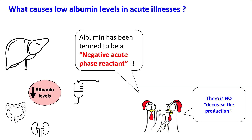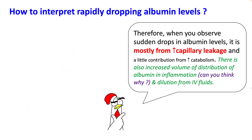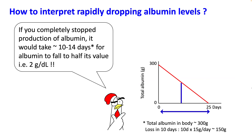So whenever you hear 'negative acute-phase reactant,' understand that hypoalbuminemia in acute illness is from leakage of albumin into the interstitium, along with some increased catabolism and dilution from IV fluids. How do you interpret rapidly dropping albumin levels? Whenever you have a rapid drop, it is almost always from increased capillary leakage, with some contribution from catabolism and dilution from IV fluids. There is also an increased volume of distribution of albumin during inflammation. If you completely stop albumin production, it will take at least 10 to 14 days before albumin levels fall to half their value.